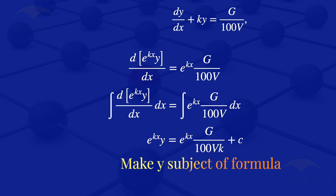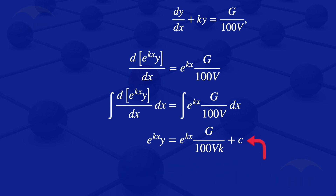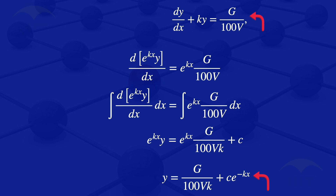The next step is to make y the subject of the formula. Dividing throughout by exponent of kx, we obtain: y equals g divided by 100v times k, plus c times exponent of minus kx. This is the general solution of the given ODE, which is what the question required us to find.